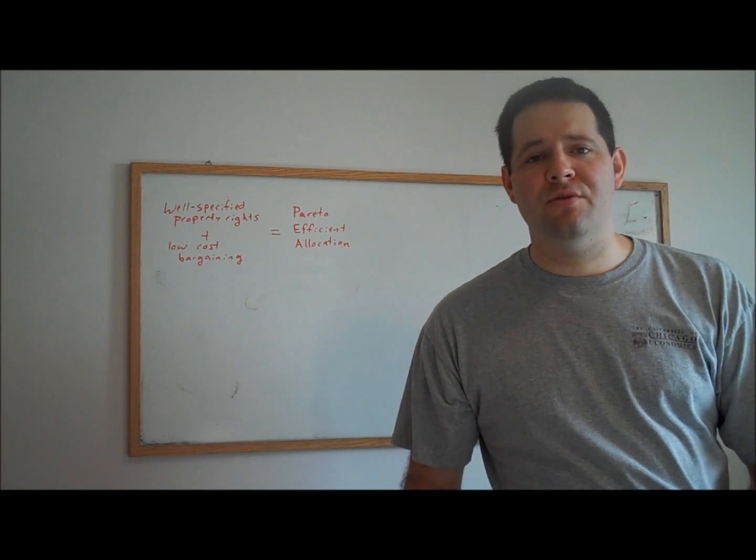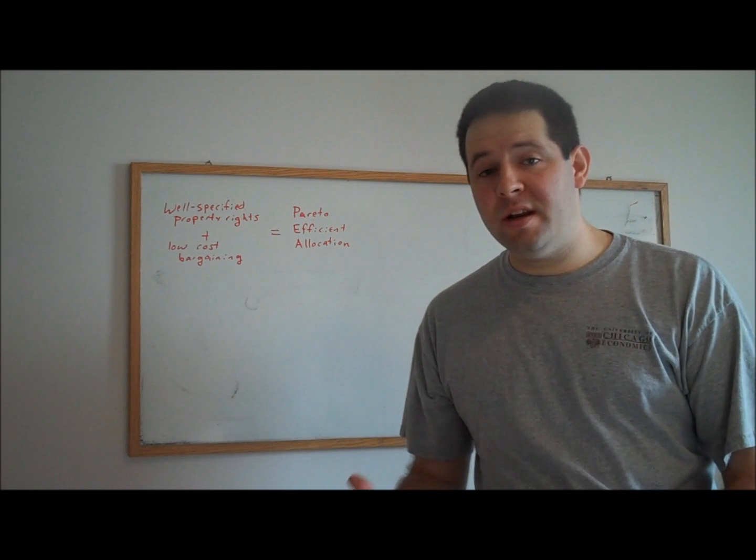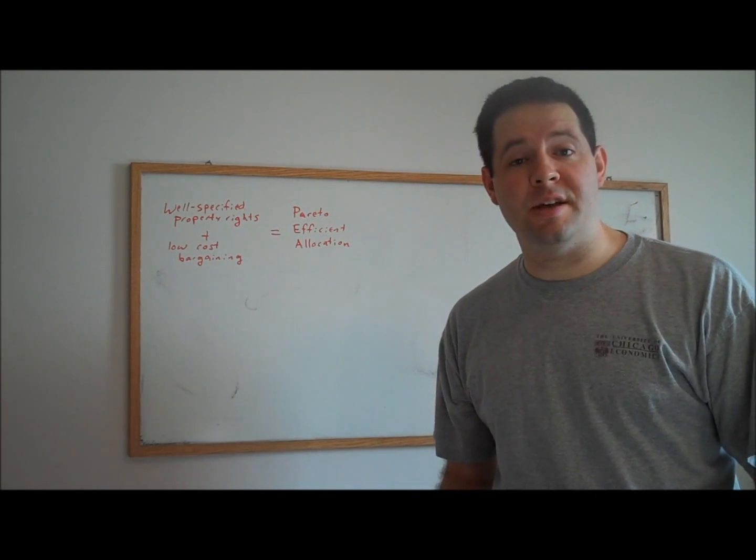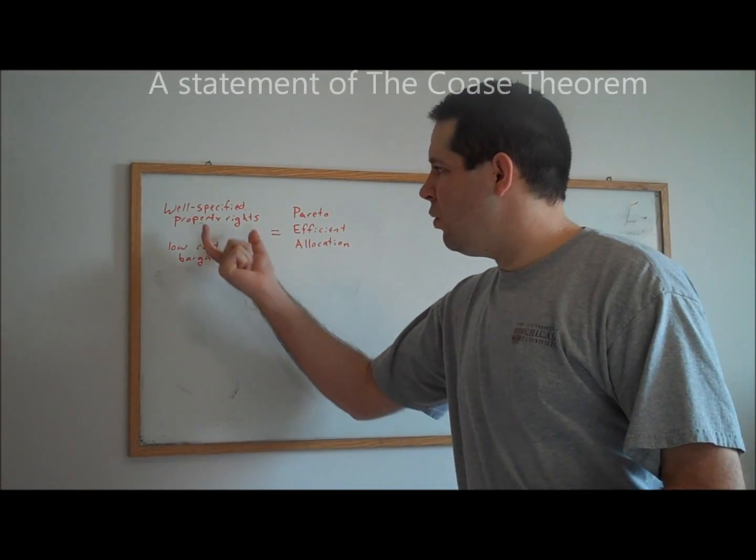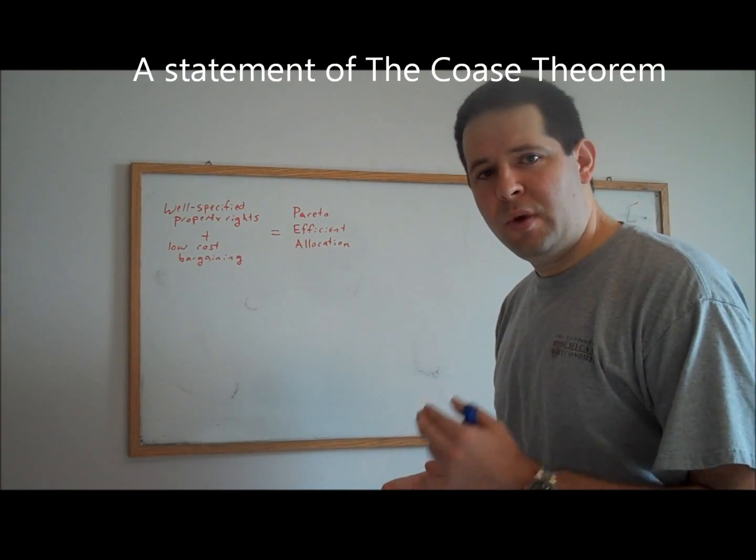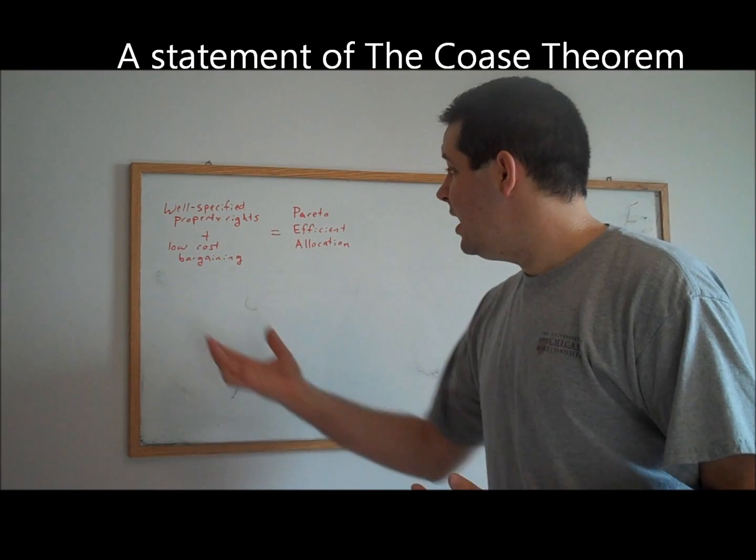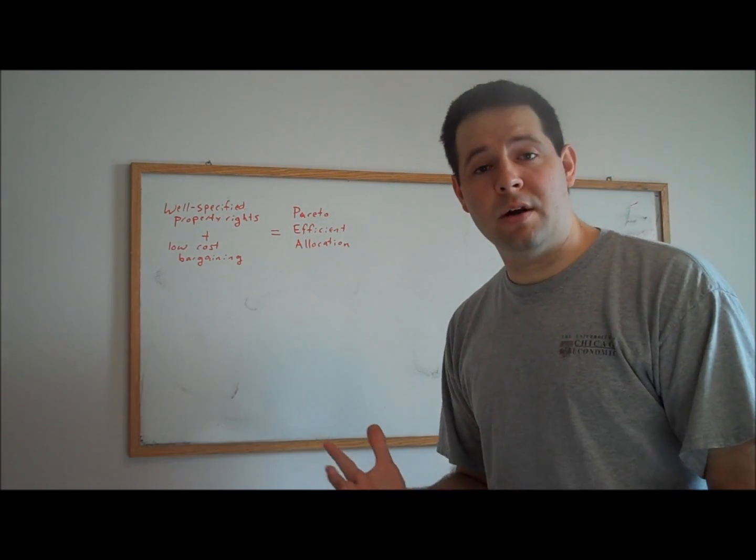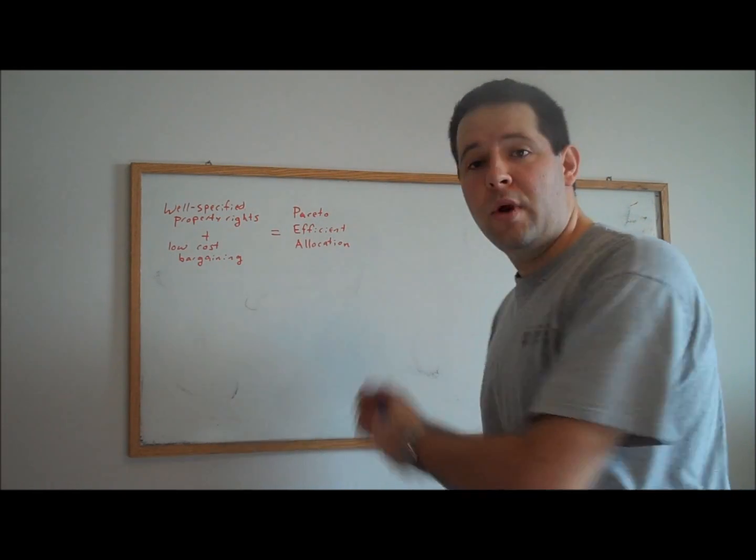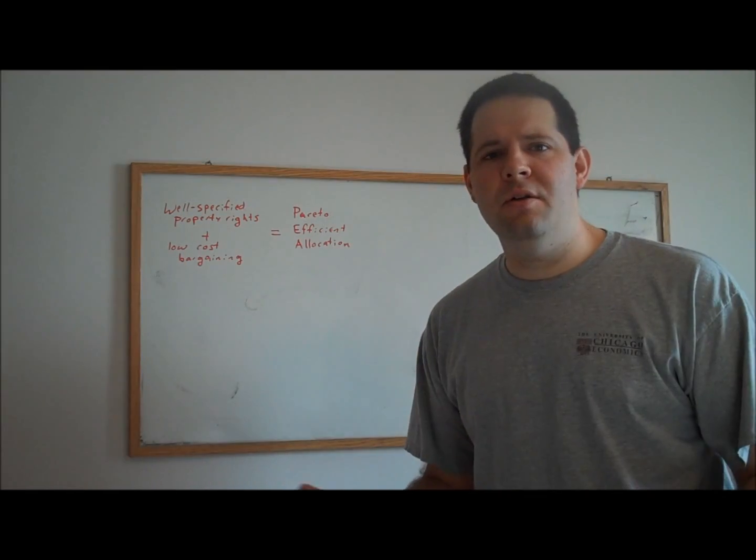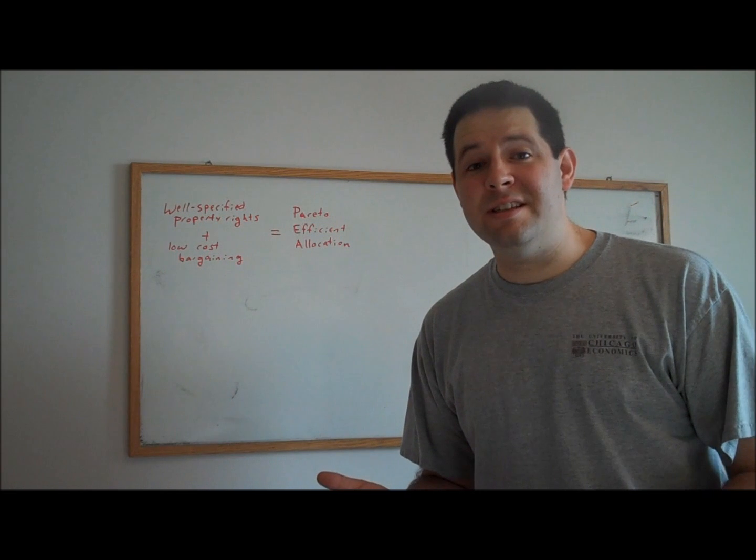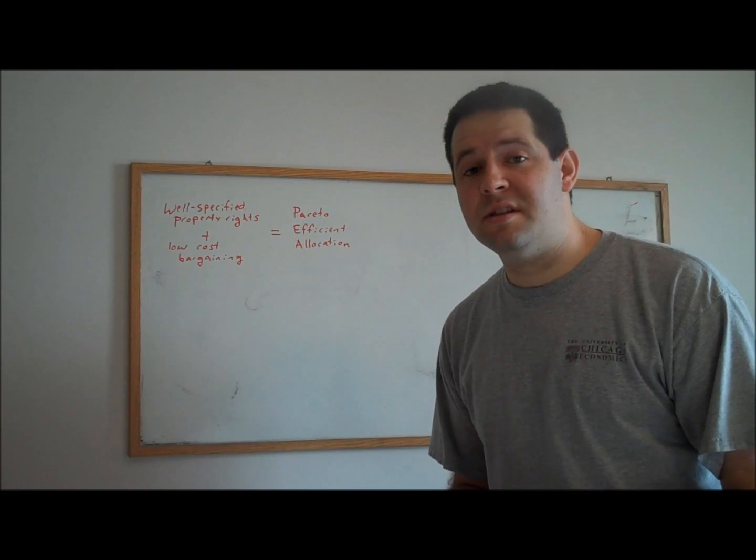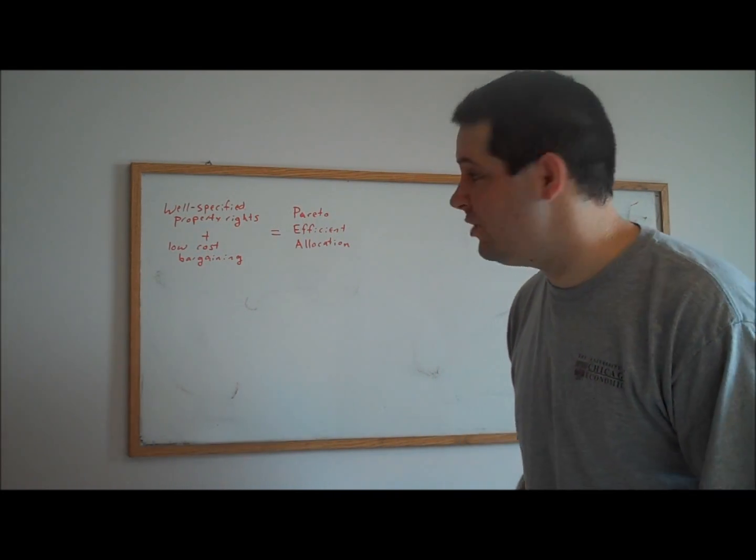In a previous video, I described the Coase Theorem and what it is and some of its properties in terms of a simple numeric example. As long as there are well-specified property rights between the bystanders and those individuals, and there's low-cost bargaining between those individuals, through a process of Coasean bargaining, we could achieve a Pareto-efficient allocation. The numeric example was potentially misleading because of its simplicity. Its simplicity imposed some conditions that don't hold necessarily in general.